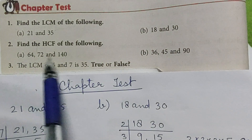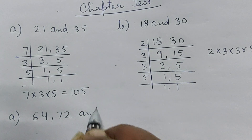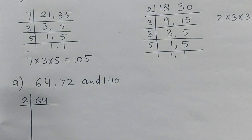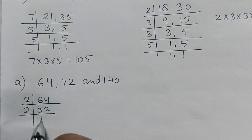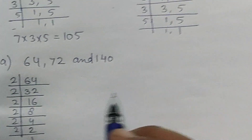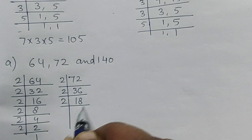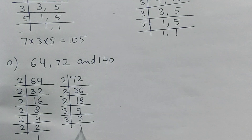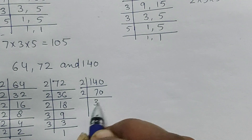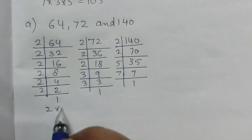We have to find the HCF. The first set of numbers is 64, 72, and 140. Finding factors of 64: divide by 2 repeatedly to get 32, 16, 8, 4, 2, 1. For 72: divide by 2 to get 36, again by 2 to get 18, divide by 2 to get 9, divide by 3 to get 3, divide by 3 to get 1. For 140: divide by 2 to get 70, again by 2 to get 35, then 5 × 7.